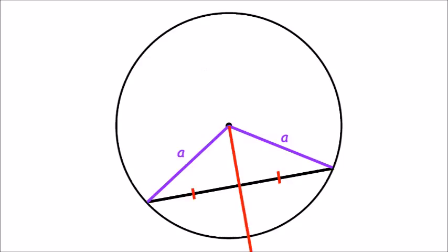If we now bisect our chord, the perpendicular bisector of our chord is a line of symmetry of our isosceles triangle, and so it passes through the vertex of our triangle at the centre of the circle and we create two right-angled triangles.